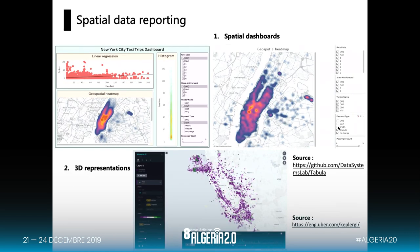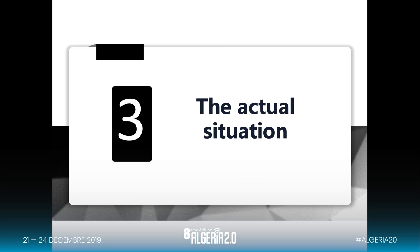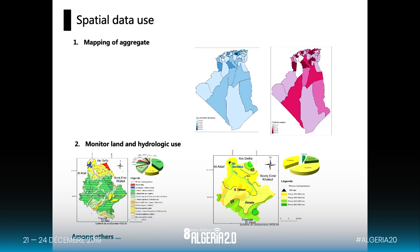In spatial data reporting or communication, we can use a lot of dashboards and there is no more need for 2D graphs only — we can use 3D graphs as shown. In Algeria, there is already a lot of use of spatial data, such as mapping aggregate health data. We can map the SMR, or standardized mortality ratios, across all 48 wilayas of Algeria, and use it also in precipitation or hydrological data.